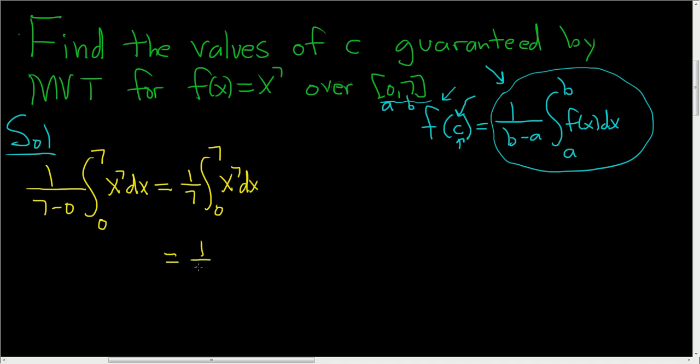This is 1/7. We use the power rule, right? We just add 1. So we get x to the 8th over 8. That's a 7. And we're going from 0 to 7. 7 times 8 is 56. So we get 1 over 56, x to the 8th, and we're going from 0 to 7.